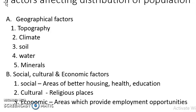Second geographical factor is climate. People usually avoid places which have extreme climate. For example, extreme hot or extreme cold — such places people avoid. Desert areas, polar areas — people don't prefer to live there. But areas which give moderate climate, which are near the seacoast or which have a subtropical climate, people prefer to live.